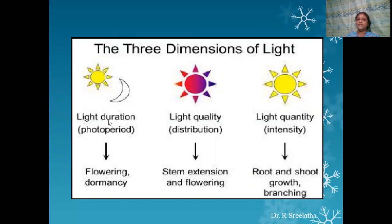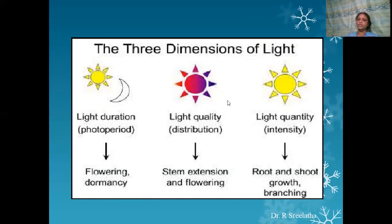The duration of light affects the flowering of the plant or dormancy of the seed. Light quality or distribution affects stem extension and flowering. Light quantity or intensity affects root and shoot growth, branching, etc. So light as a climatic factor has three dimensions: duration, quality, and quantity.